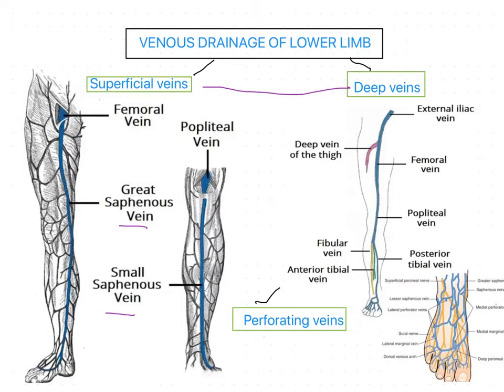The great saphenous vein is formed on the dorsum of the foot by the union of the medial end of the dorsal venous arch and the digital veins from the medial side of the great toe. It then ascends in front of the medial malleolus and obliquely crosses the medial side.